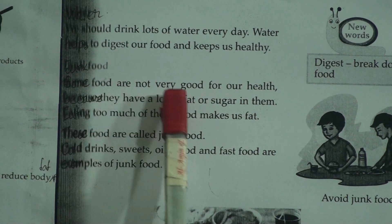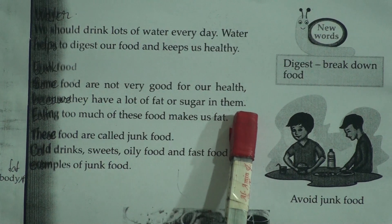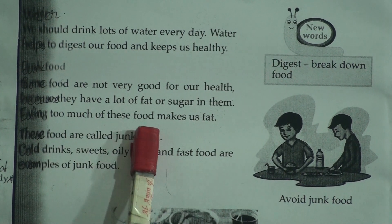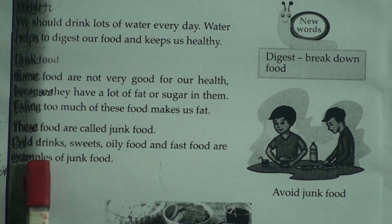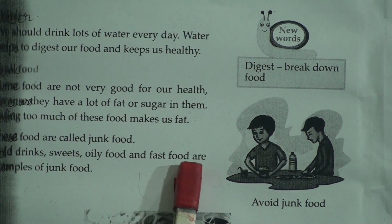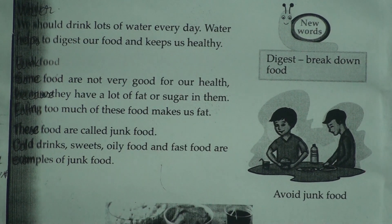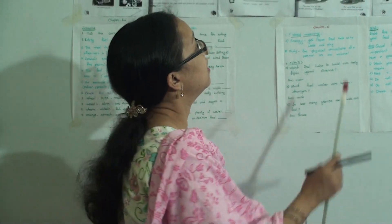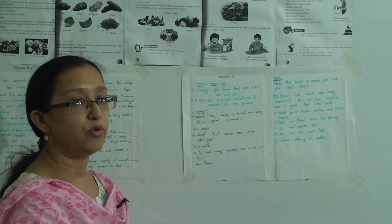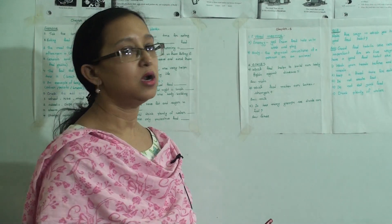Junk food — some foods are not very good for our health because they have a lot of fat or sugar in them. Eating too much of this food makes us fat. These foods are called junk food. Cold drinks, sweets, oily food, and fast food are examples of junk food. Lots of kids like junk food like burger, chicken fry, french fry, and pasta. But we should avoid this food because they are full of sugar and salt, which is not healthy.